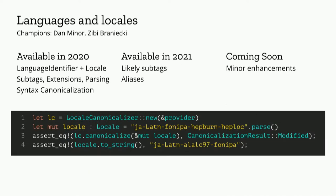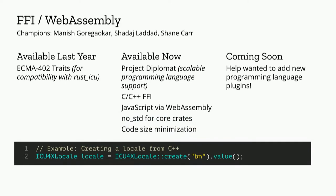Coming soon, we're supporting user-friendly data slicing and implementing vertical locale fallbacks to make everything completely ready. The next slide is languages and locales. Last year in 2020, we already had language identifier, locale, subtags, and syntax canonicalization. Now we have likely subtags and aliases, and we consider ourselves mostly feature complete with languages and locales at this point. Various minor enhancements around the edges and minor spec compliance things are coming soon. Another really cool big change since last year is FFI and WebAssembly.